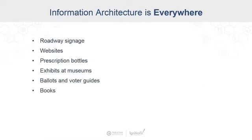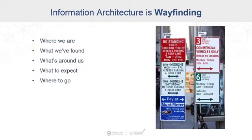Once you start to think about it, you realize that information architecture is all around us. It's a driving force behind things like roadway signage, every website you've ever visited, instructions on prescription medication bottles, exhibits at museums, ballot and voter information guides, every book you've ever read, and even presentations like this one. What do these things all have in common? They're all used for wayfinding in one way or another. Information architecture helps us navigate through complexity, makes our interfaces intuitive and easy to control. An interface with solid information architecture should convey where we are, what we found, what's around us, what to expect, and where to go.